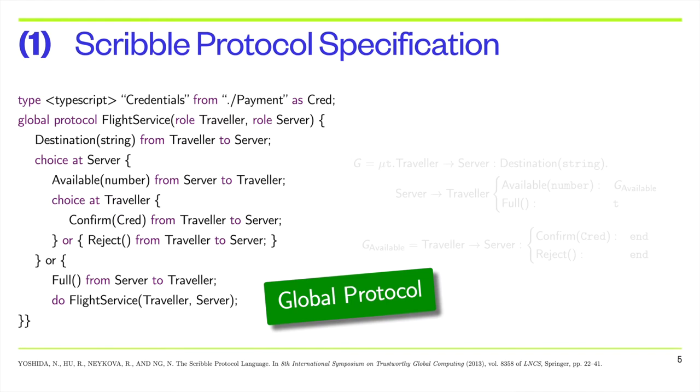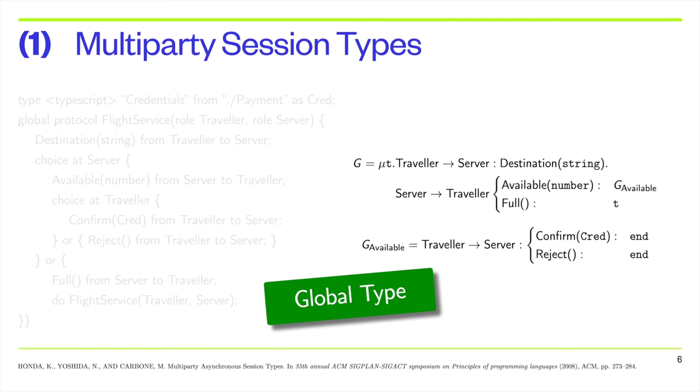This can be achieved using the Scribble toolchain. The developer uses Scribble to specify the global protocol as a sequence of send and receive actions. Scribble is based on multi-party session types, which is a typing discipline for concurrent processes.